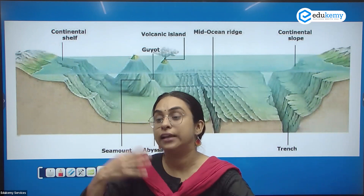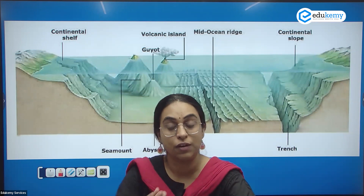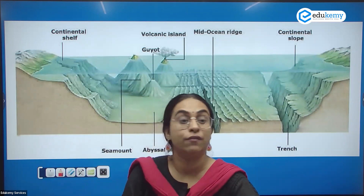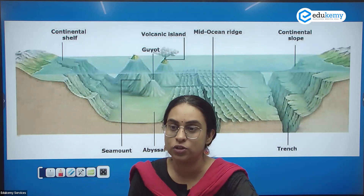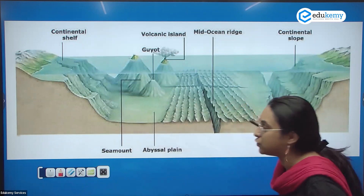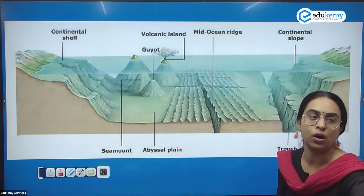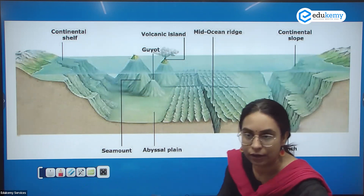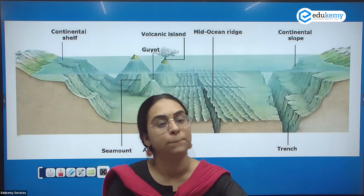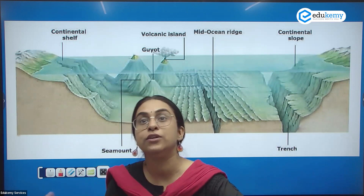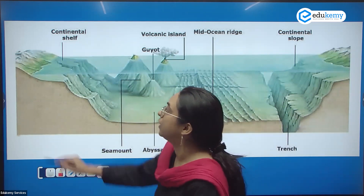Inside the ocean waters there are various landforms — we have mountains, chains of mountains, islands, and trenches. So it is not simply a flat feature. In the ocean there is a flat surface also called the deep ocean plain, also called the abyssal plain, but despite that we have other features in the oceans as well.